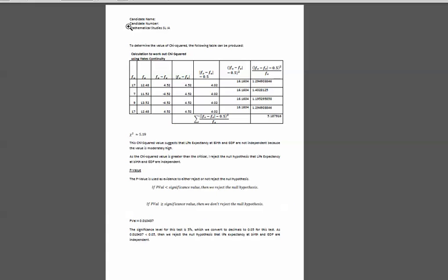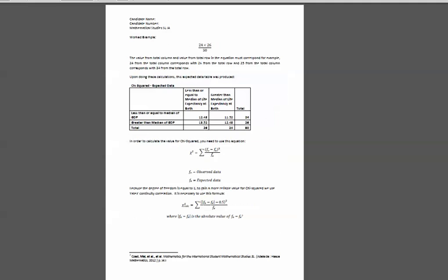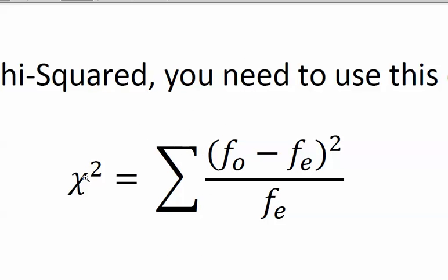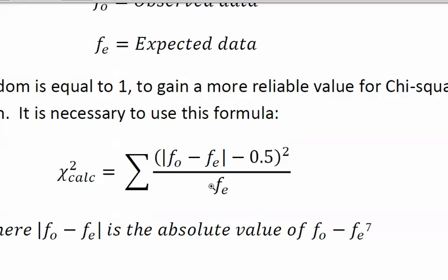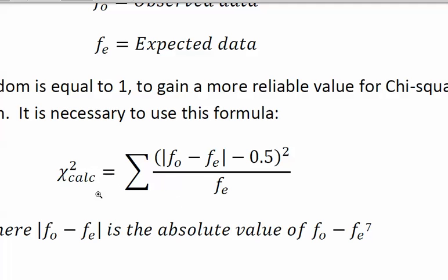Now, let me just find my student's work. He's got the two formulas here. So this is the original one you would have been taught in class, and this is the one you're going to get examined on. But for the purposes of your project, if your degree of freedom is 1, you must use this alternative formula here, which is a little bit more complicated, this formula here for chi-squared.